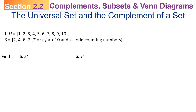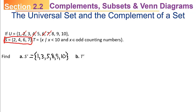Two things we want to find here. Part A, we want to find S complement. In order to find the complement of a set, you have to know the universal set. We go back to the universal set and cross out any elements that are in S. Whatever is left is in the complement. The elements that didn't get crossed out are 1, 3, 5, 8, 9, and 10. So S complement is the set containing 1, 3, 5, 8, 9, and 10.